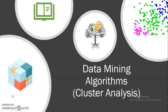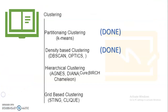Hello everyone, welcome to the data mining algorithms lecture series. We are learning about cluster analysis algorithms. Till now we have covered partitioning clustering method and density-based clustering method. In today's lecture we are going to cover hierarchical clustering method. To find the hierarchy between clusters we have two approaches: Agnes and Diana, and based on these approaches we have important algorithms like Cure, Birch, and Camelin.